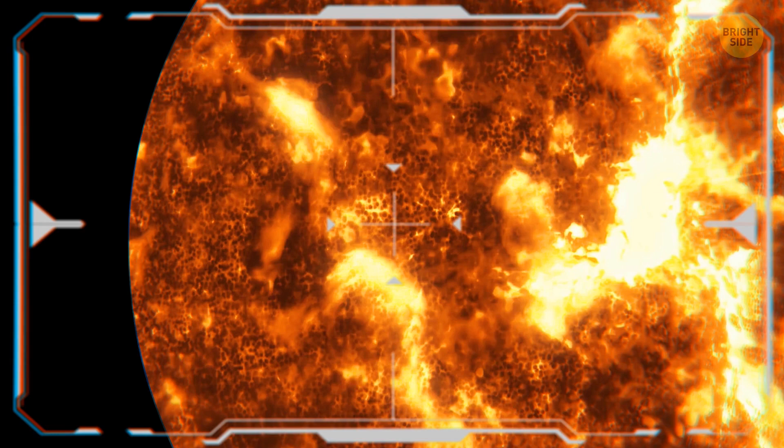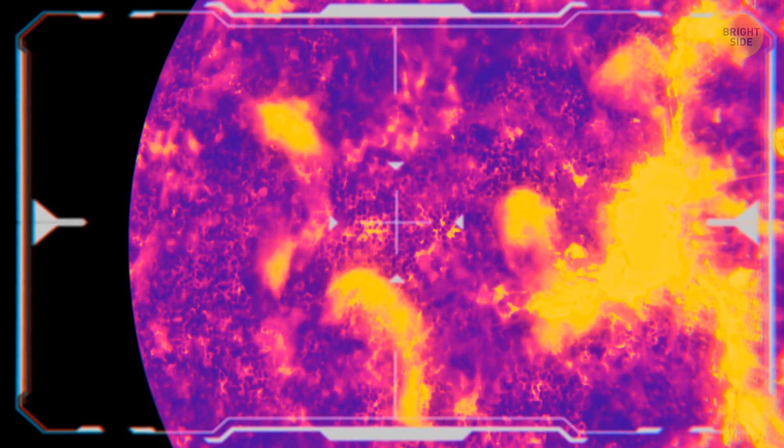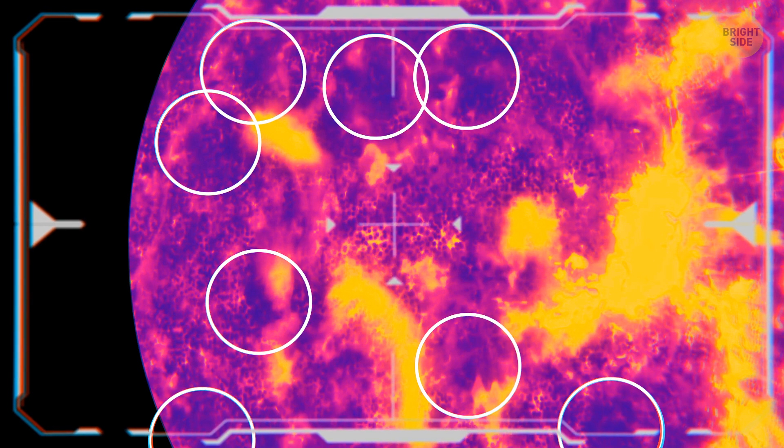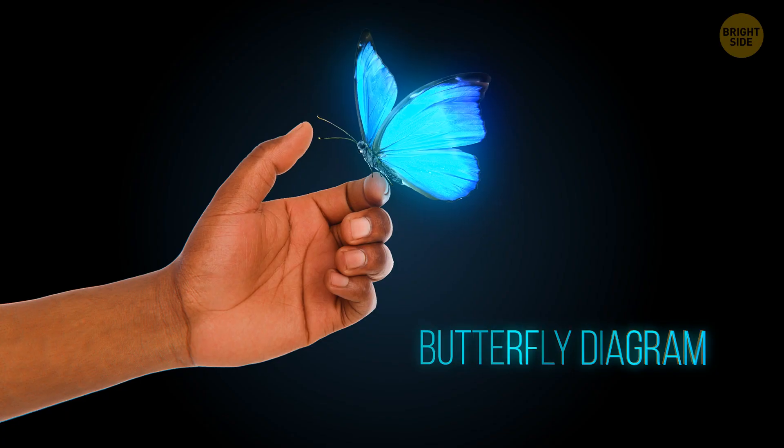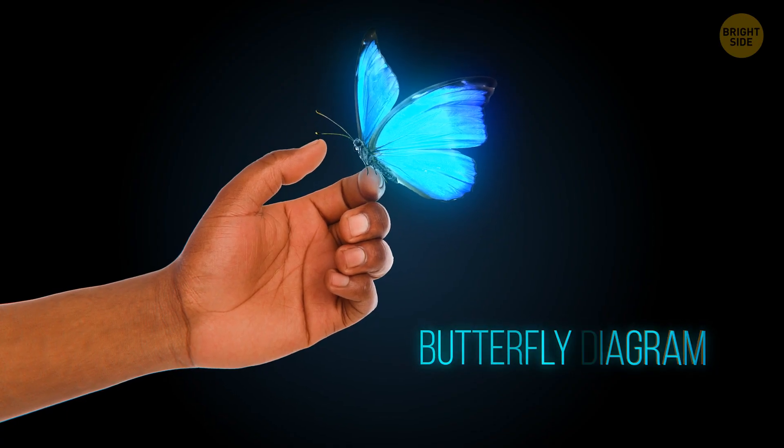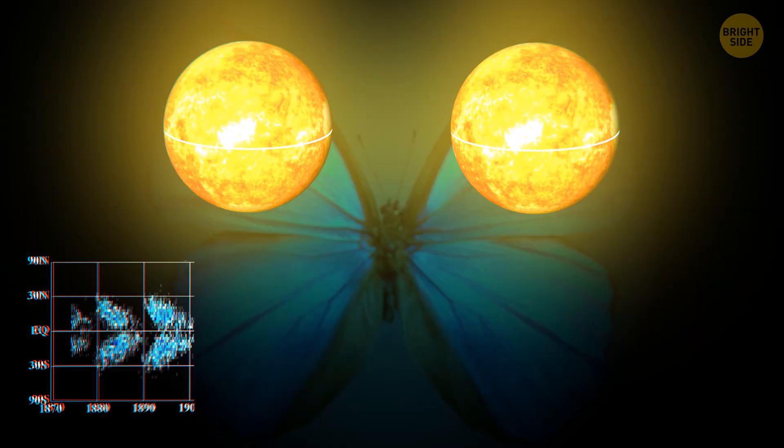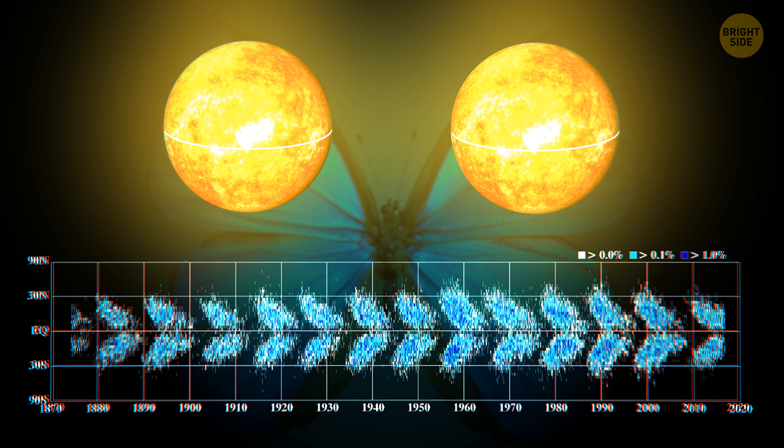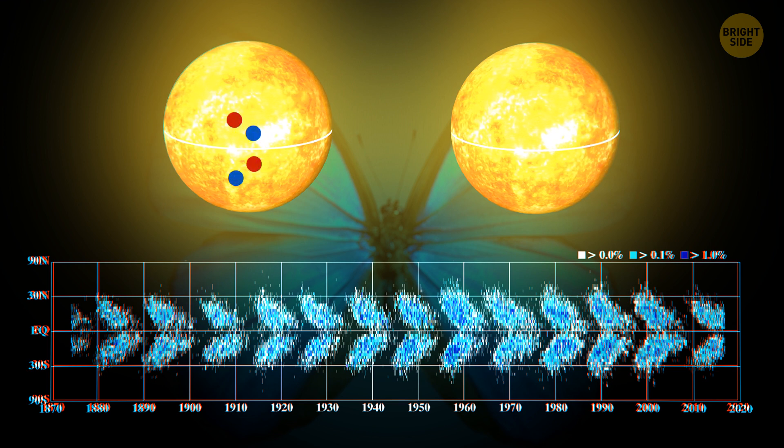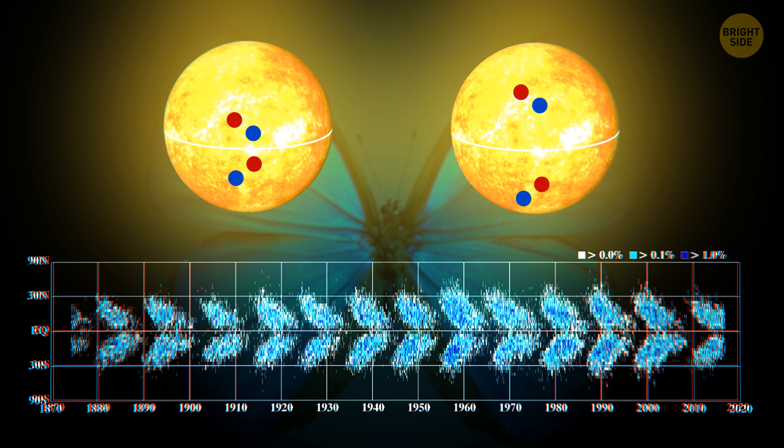Observing sunspots is the easiest way to measure how active the sun is. The more sunspots that are visible, the more active the sun is. A graph known as the butterfly diagram tracks the 11-year period of sunspot activity. The butterfly diagram shows how sunspots disappear regularly from the surface of the sun and reappear regularly in other locations.